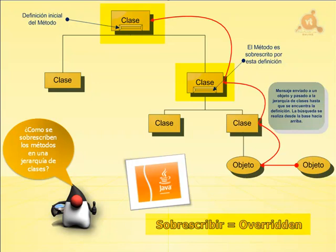Así que podemos crear un método en una subclase que evite que se use un método de una superclase. Para hacerlo, lo único que tenemos que hacer es darle a ese método el mismo nombre, el mismo tipo de retorno y los mismos argumentos que el método que se encuentra en la superclase. Es lo que se denomina overriding. Para que se pueda sobreescribir un método heredado de la superclase, ese método tiene que tener el mismo nombre, el mismo tipo de retorno y los mismos argumentos.